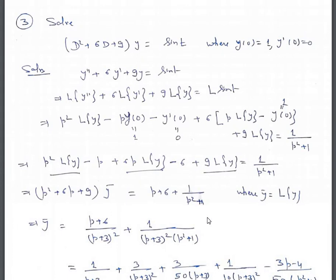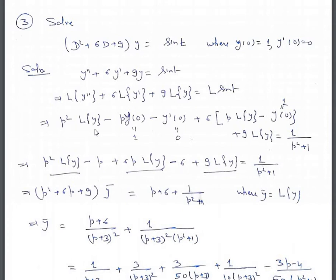Let's take the third example. Solve (D² + 6D + 9)y = sin(t). This equation can be written as y'' + 6y' + 9y = sin(t). Take Laplace transform on both sides: L{y''} + 6·L{y'} + 9·L{y} = L{sin(t)}. Now L{y''} = p²·L{y} - p·y(0) - y'(0), plus 6 times [p·L{y} - y(0)] plus 9·L{y} = 1/(p² + 1).